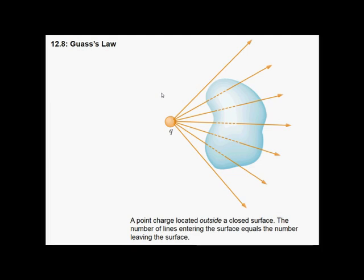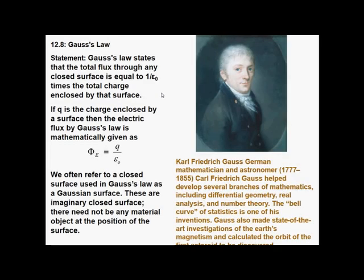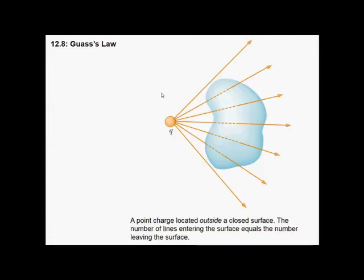Before starting Gauss's Law, it is very important to know that if a point charge is outside a sphere, then you can see clearly from the diagram that the flux entering the surface is equal to the flux leaving the surface, so the total flux will be 0. This is the basic concept of Gauss's Law, because Gauss's Law only works for a closed surface — if the surface is open, then total flux would be 0.